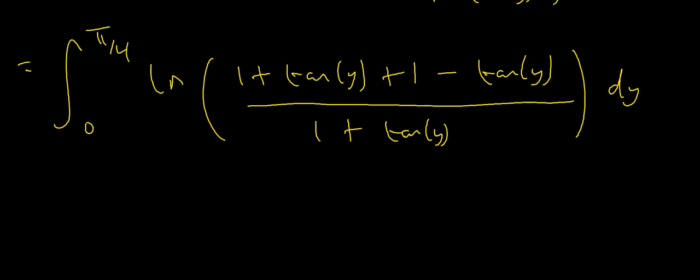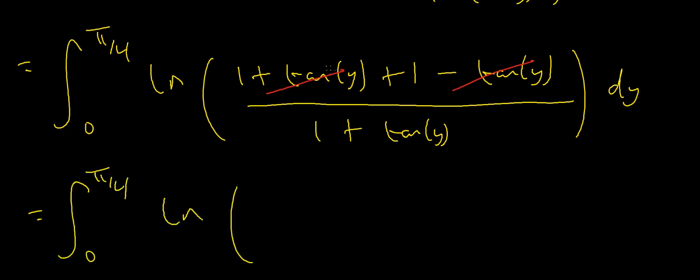There's some simplification here: 1 plus 1 equals 2, and plus tan y minus tan y gives 0 — they cancel. So this gives me the integral from 0 to π/4 of the natural log of 2 over (1 plus tan y), dy.